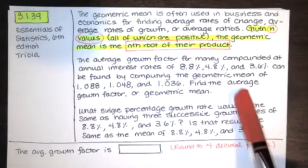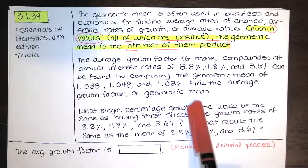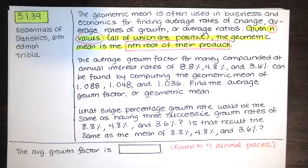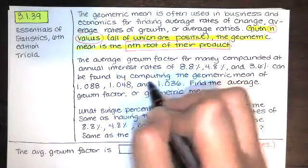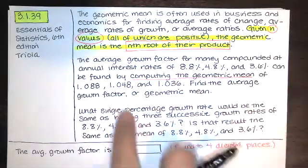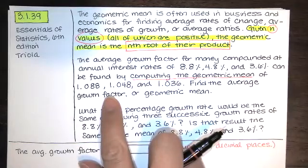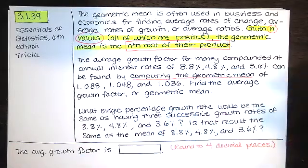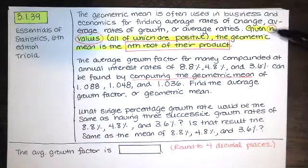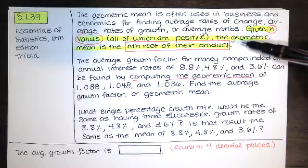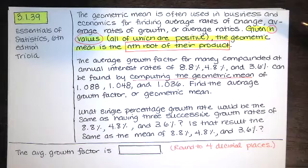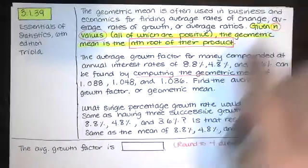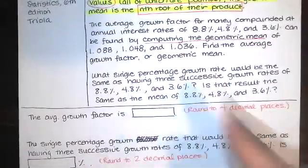Then the question says, find the average growth factor, which is this, which can be found by computing the geometric mean. So when they ask for average growth factor, they're asking for the geometric mean, and again, if you have n numbers, the geometric mean is the nth root of their product, provided that all those numbers are positive. So then let's answer this first question, and then we'll look at the second part.